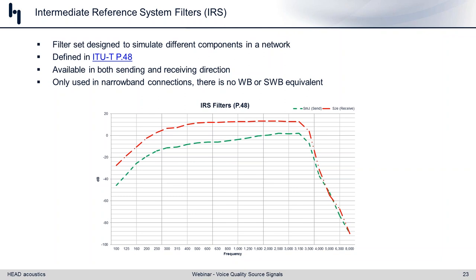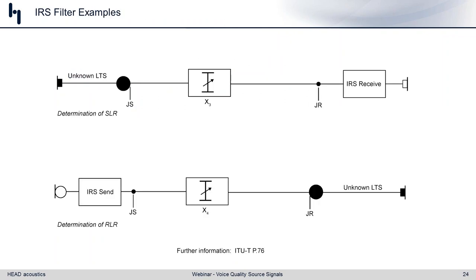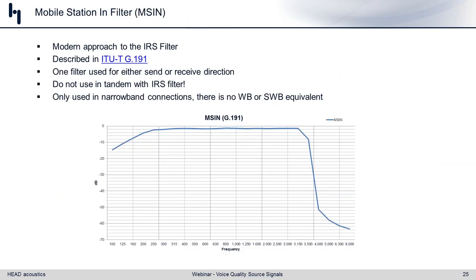More likely for use today is the EMSIN or Mobile Station IN filter, defined in ITU-T G.191. This is the more modern approach used for mobile networks. The true definition in G.191 of an EMSIN filter is a narrowband filter only, rolling off at 3,400 Hz in the shape shown on the graph.